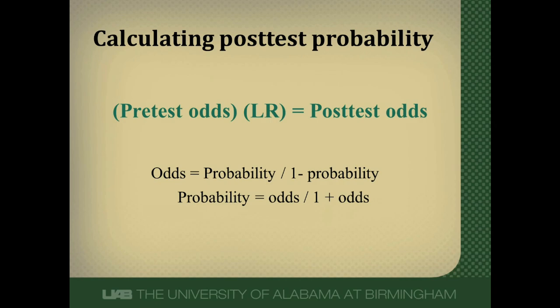An EBM calculator determines post-test probability by multiplying the likelihood ratio — whether positive or negative — by the pre-test odds. Multiplying pre-test odds by the likelihood ratio gives post-test odds. You can't use probabilities directly; you must convert using the formula: odds = probability divided by (1 minus probability). Then convert post-test odds back to probability using: probability = odds divided by (1 plus odds). Most people won't do this by hand, but this is how an online calculator or app performs the calculation.